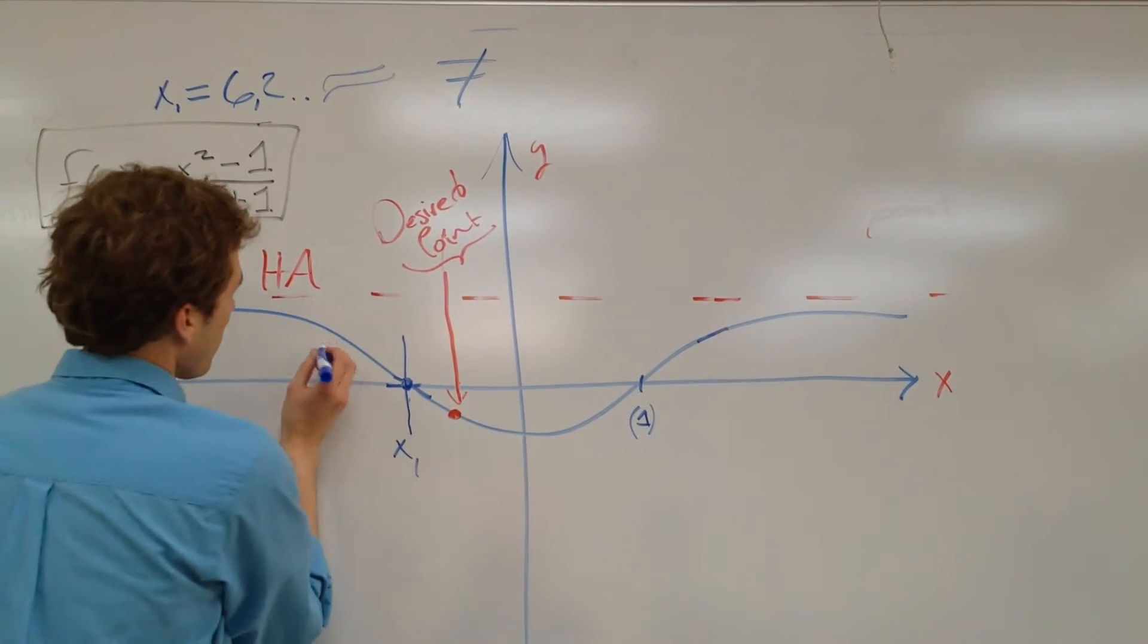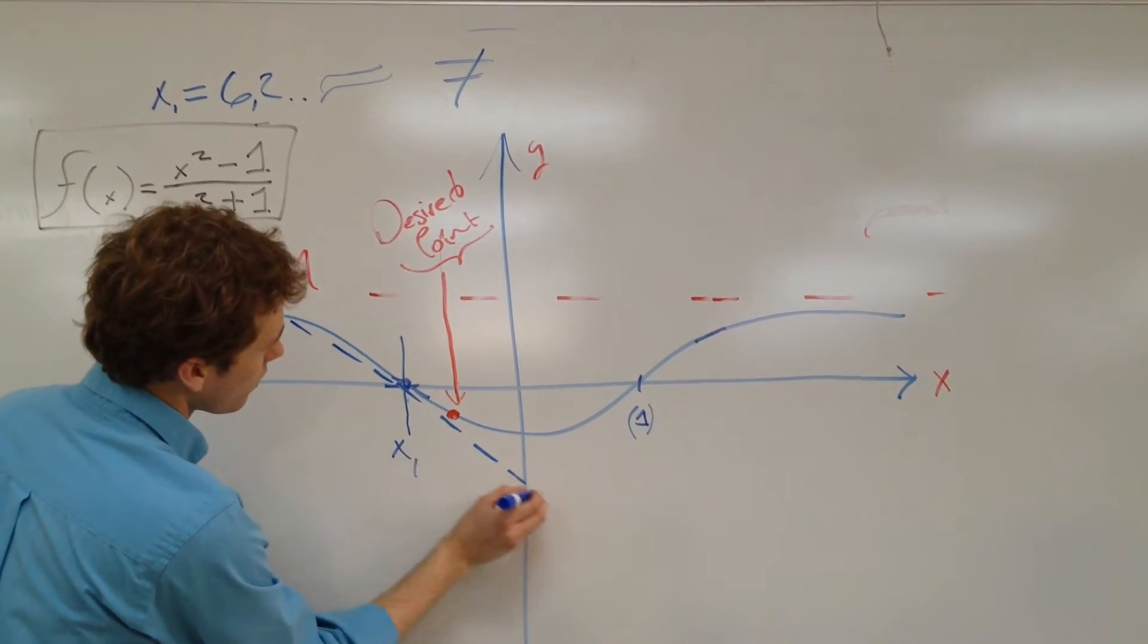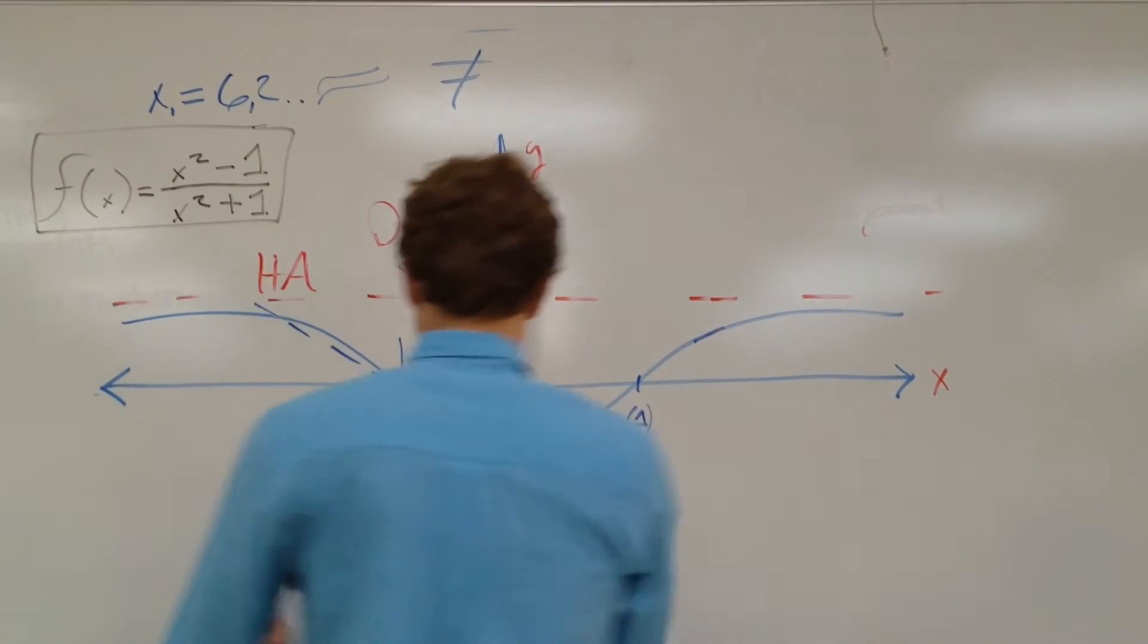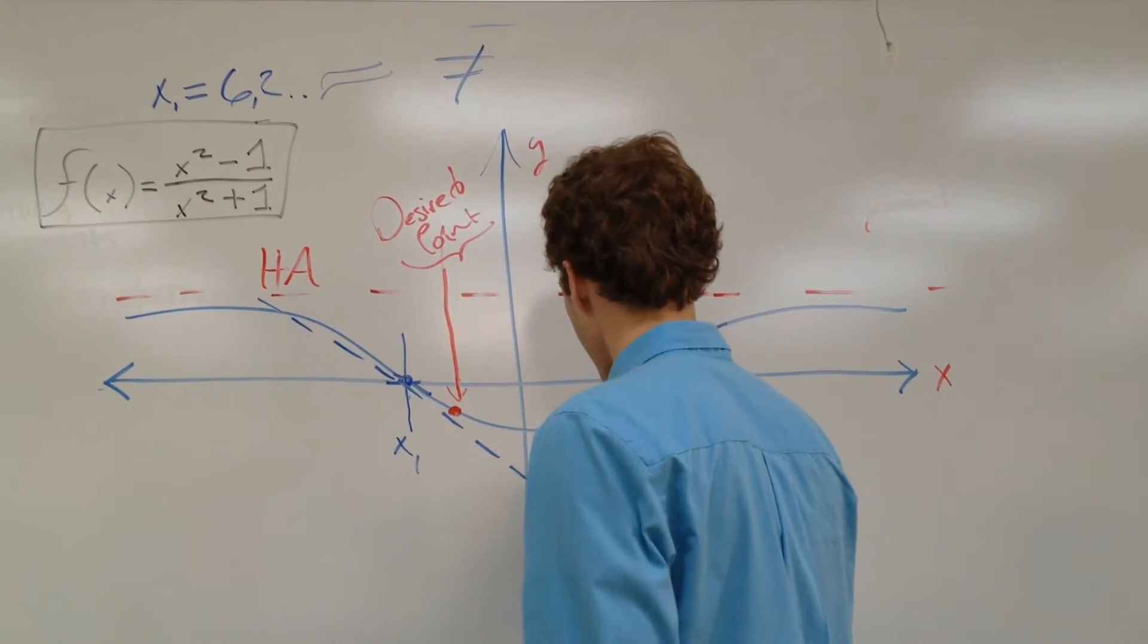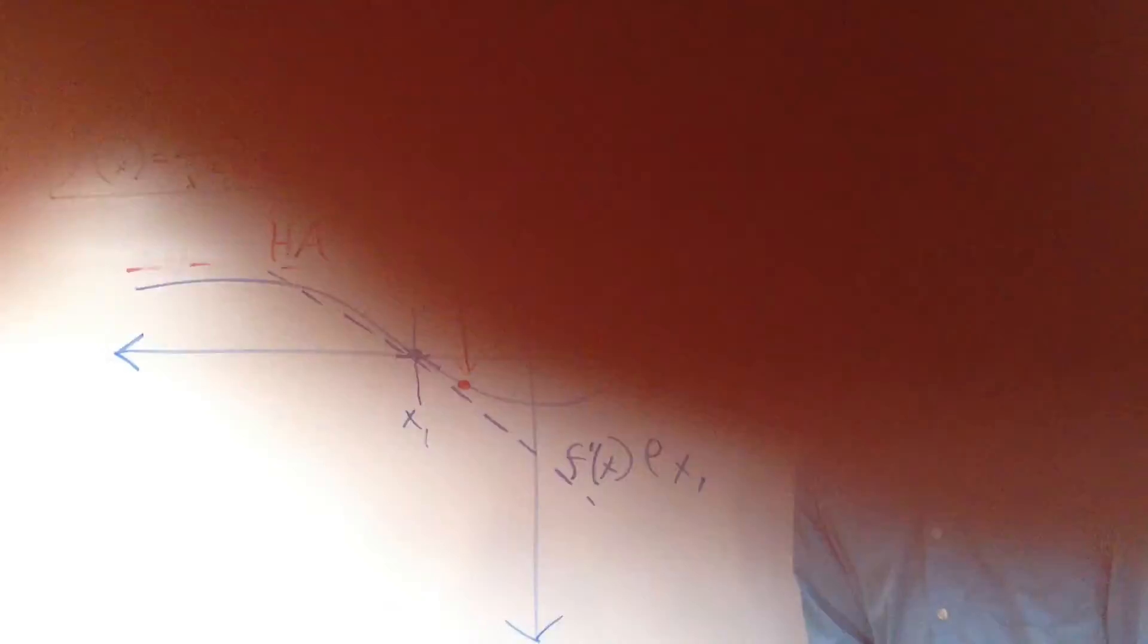So we take the derivative to that point, and the derivative probably looks something a little bit like this, coming off. So this right here is f prime of x at x1. Okay?